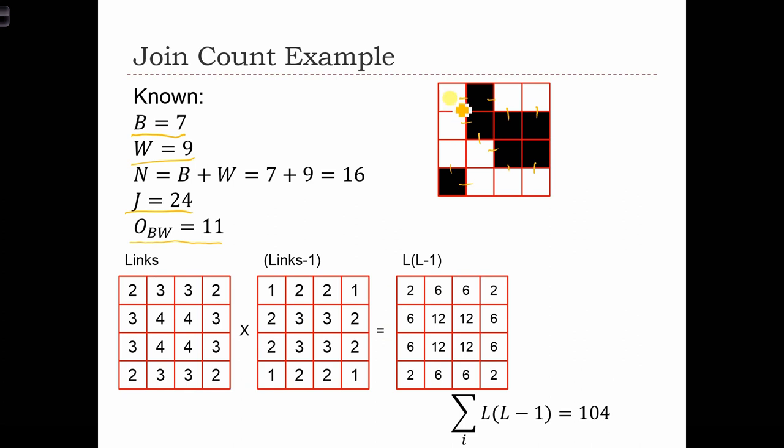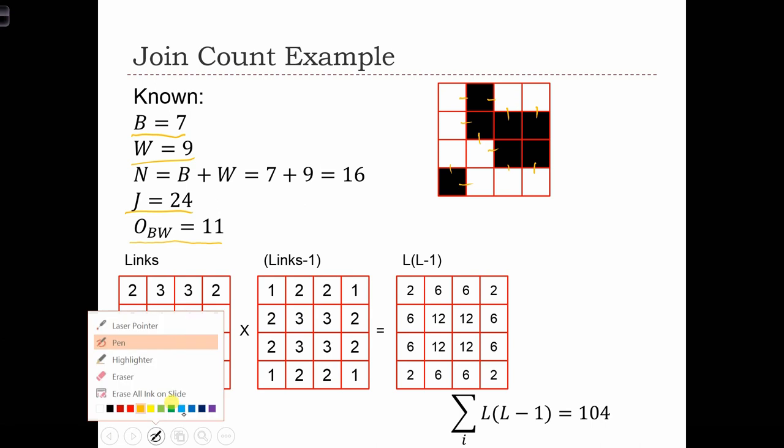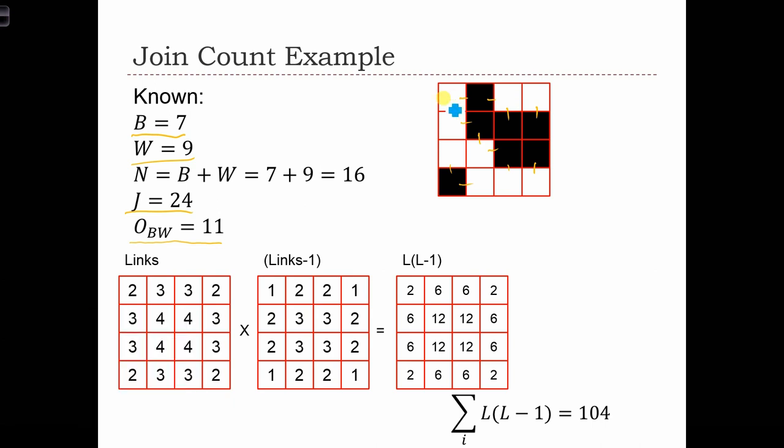This cell has two neighbors. This one has three, 1, 2, 3. This one has three, 1, 2, 3. This one in the middle has four, 1, 2, 3, 4. So for each location i, we're just keeping track of how many neighbors it has, and we're writing them in the boxes like this. So this is the pattern of links.